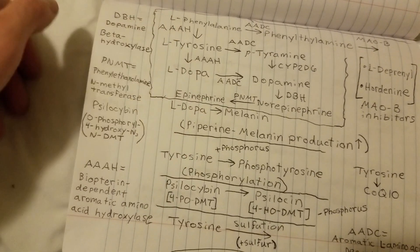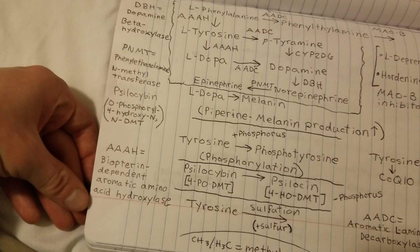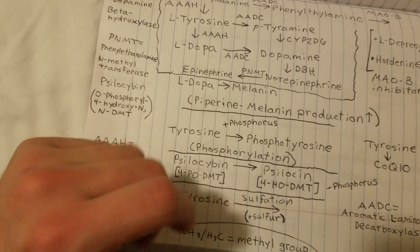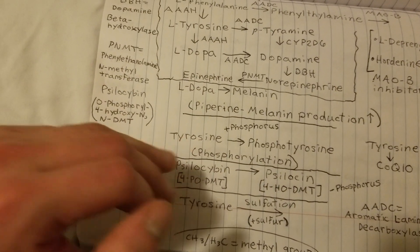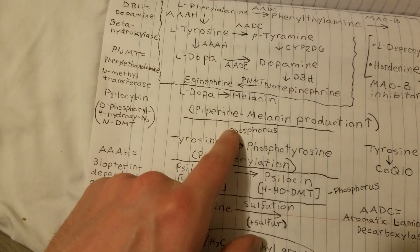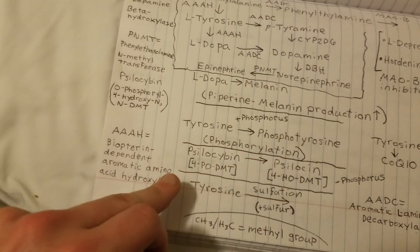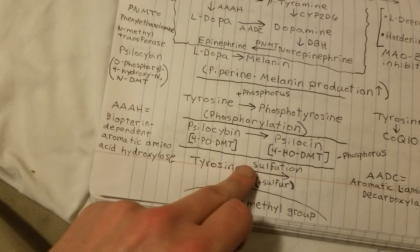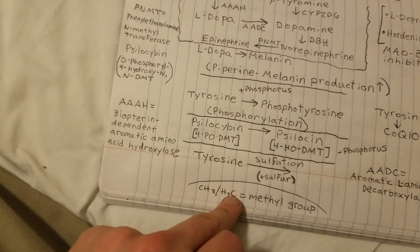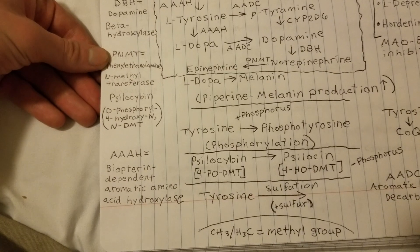The metabolic reaction here is aromatic amino acid hydroxylase — the addition of a hydroxyl group. There's also another metabolic reaction which breaks down tyrosine and is known to increase dopamine levels: phosphorylation, which is the addition of a phosphorus element within the chemical structure to make phosphotyrosine. Tyrosine also undergoes sulfonation, which is the addition of sulfur.